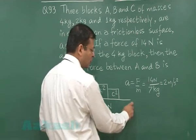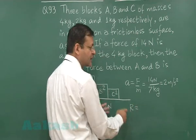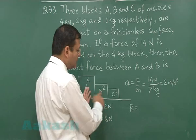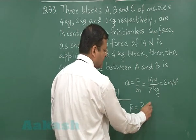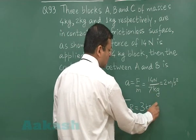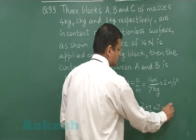So that contact force, if I denote it by R, then that force is equal to mass into acceleration. Mass is 3 kg multiplied by this acceleration 2 and that makes it 6 Newton.